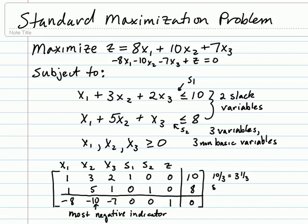Our second ratio would be 8 over 5, which is 1 and 3 fifths. The smaller of those two, and actually we're looking at the smallest non-negative entry of these two, would be 1 and 3 fifths. That's an indication that the 5 is the pivot element.